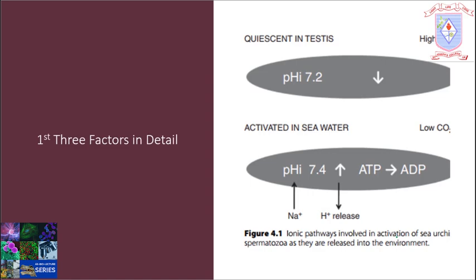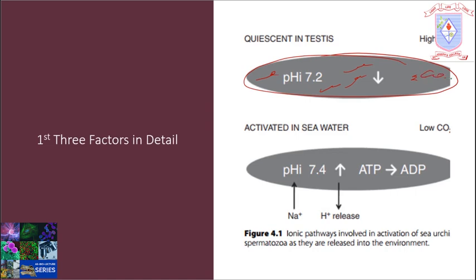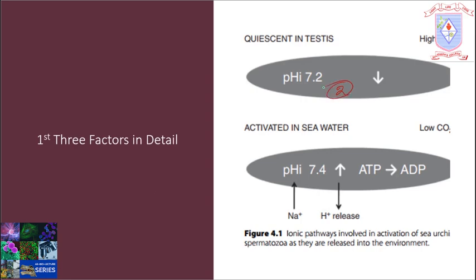Inside the testis, sperm are inactive because the internal pH is 7.2, kept low by the high concentration of carbon dioxide in the gonad. The second factor keeping sperm inactive is the high external potassium ion concentration inside the gonadal environment.